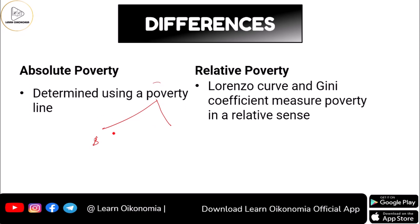In the case of relative poverty, you can use various tools like the Lorenz curve, Gini coefficient, etc. Here you can compare different people, different nations, and different sections of society.